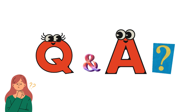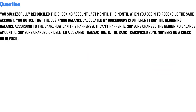Our question today is: you successfully reconciled the checking account last month. This month when you begin to reconcile the same account, you notice that the beginning balance calculated by QuickBooks is different from the beginning balance according to the bank. How can this happen? Option A: it cannot happen. Option B: someone changed the beginning balance of the account.